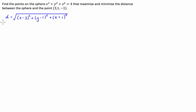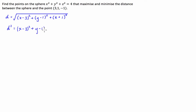It's going to be easier for us to optimise the squared distance rather than the distance itself, because it'll make our differentiation easier. So we should optimise d squared, which means we don't need the square root — we can just use (x - 3) squared plus (y - 1) squared plus (z + 1) squared.